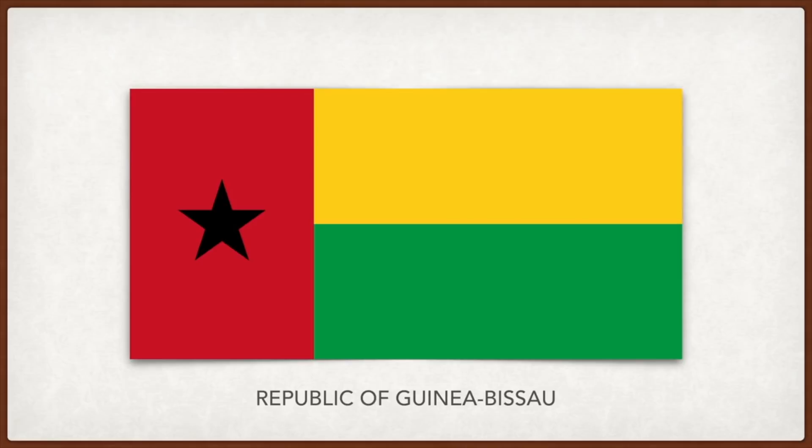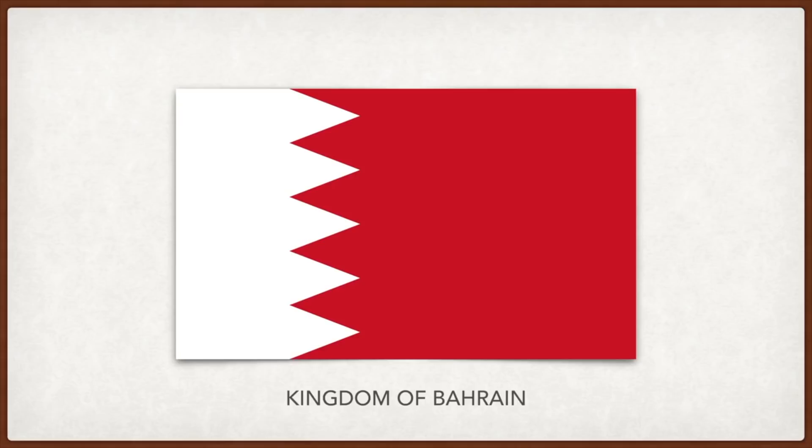Yellow is symbolic for harvest and fruits of labor, and green is for agriculture and jungles. Bahrain: the earliest flags of Bahrain were plain red until a treaty was signed with the British, and white was added to signify friendly relations. The five triangles represent the five pillars of Islam.